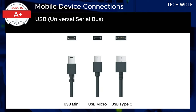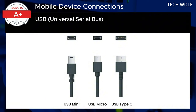First, we have USB — Universal Serial Bus Connections — a wired standard for data transfer and device charging. Mobile devices often use USB-C, micro-USB, or mini-USB ports. USB-C is the latest and most versatile, known for its reversible design and faster data transfer and charging. Micro-USB and mini-USB, though older, are still widely used.